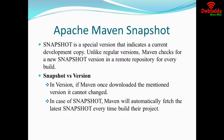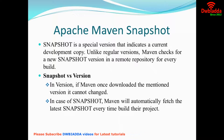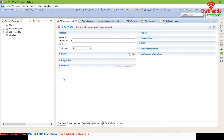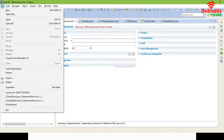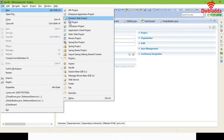For each and every module or phase, we will be giving a copy of the particular project. In Maven, snapshot versioning can be done using the library files. Let's see how the snapshot is created for a project.